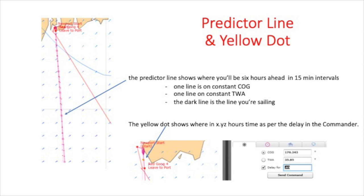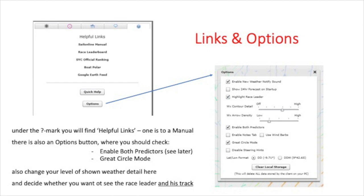To the right of your screen you'll see a column topped with five little tabs: a steering wheel, a clock, a podium, a speech bubble, and a question mark. Click on the question mark and you'll get a sub-screen headed 'Helpful Links', with below said links a quick help button and an options button. The sailonline manual should be helpful, but like all manuals it is weighty. There's nothing like RTFM though, where the M stands for manual. The other helpful-ish links I'll leave you to explore yourselves.